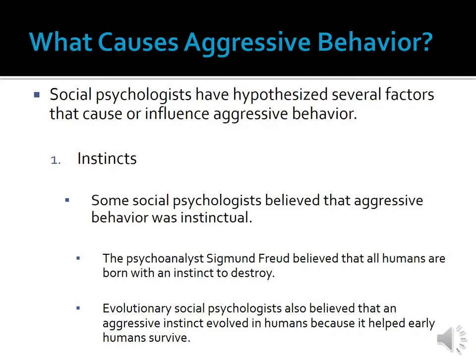The first factor is instincts. The instinctual theory of aggression was one of the earliest in social psychology. Social psychologists who believed that aggression was instinctual argued that humans are born with a tendency to be aggressive. For example, the psychoanalyst Sigmund Freud believed that all humans are born with the instinct to love as well as an instinct to destroy. He believed that both of these instincts demanded release — people released their instinct to love through close and sexual relationships, and their instinct to destroy through performing aggressive acts against others and on material objects.